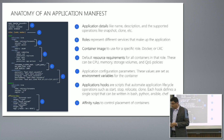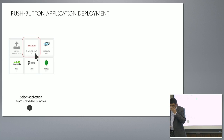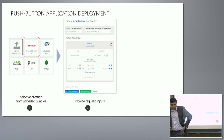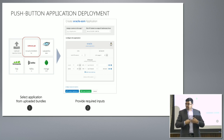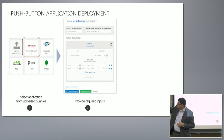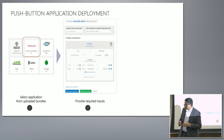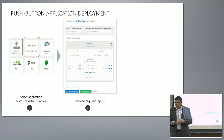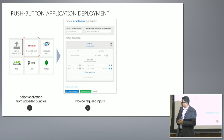So what happens next? The user takes this manifest, uploads it into our product, and it shows up as what we call application bundles. Here I show a sample set of bundles: Oracle, Cassandra, Hortonworks, Kafka, Mongo, and a bunch of other bundles we support. Of course, you could customize and put your own thing together as well.